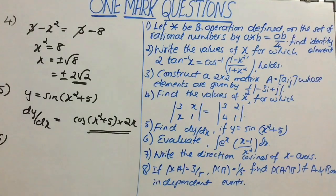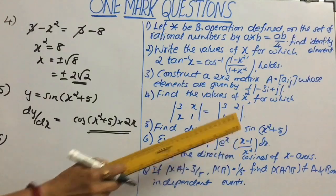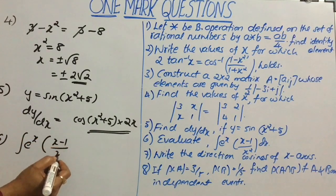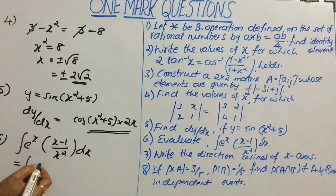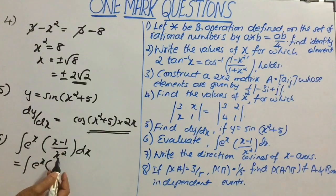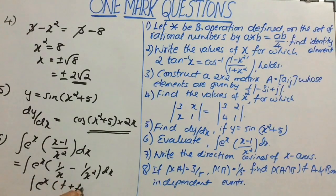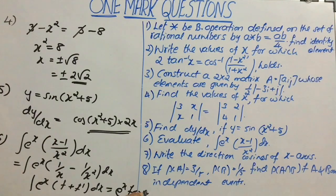Question 6: evaluate the integral of e to the power x into x minus 1 by x squared dx. This can also be written as integral of e to the power x into 1 by x minus 1 by x squared dx. This is of the form integral e to the power x into f of x plus f dash of x dx, where f of x equals 1 by x and f dash of x equals minus 1 by x squared. Therefore, using this formula, the result is e to the power x into 1 by x plus c.